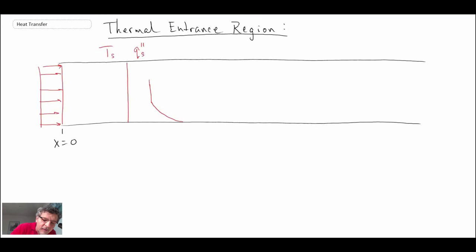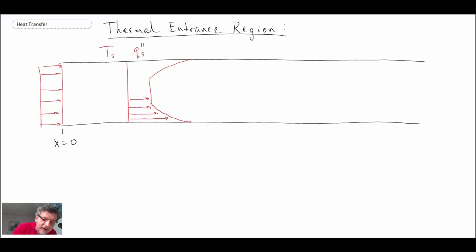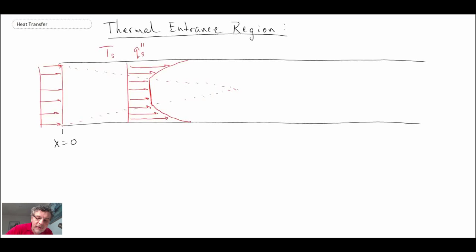This is the case where we have heating on the wall, and it should be symmetric. The temperature profile would look something like this. You'll notice that in the center we still have the same original temperature as at the inlet, because our thermal boundary layer is still growing. If I draw a dotted line for the thermal boundary layer, eventually in the pipe flow that boundary layer will close — and that is when we get to fully developed flow with the thermal boundary layer.